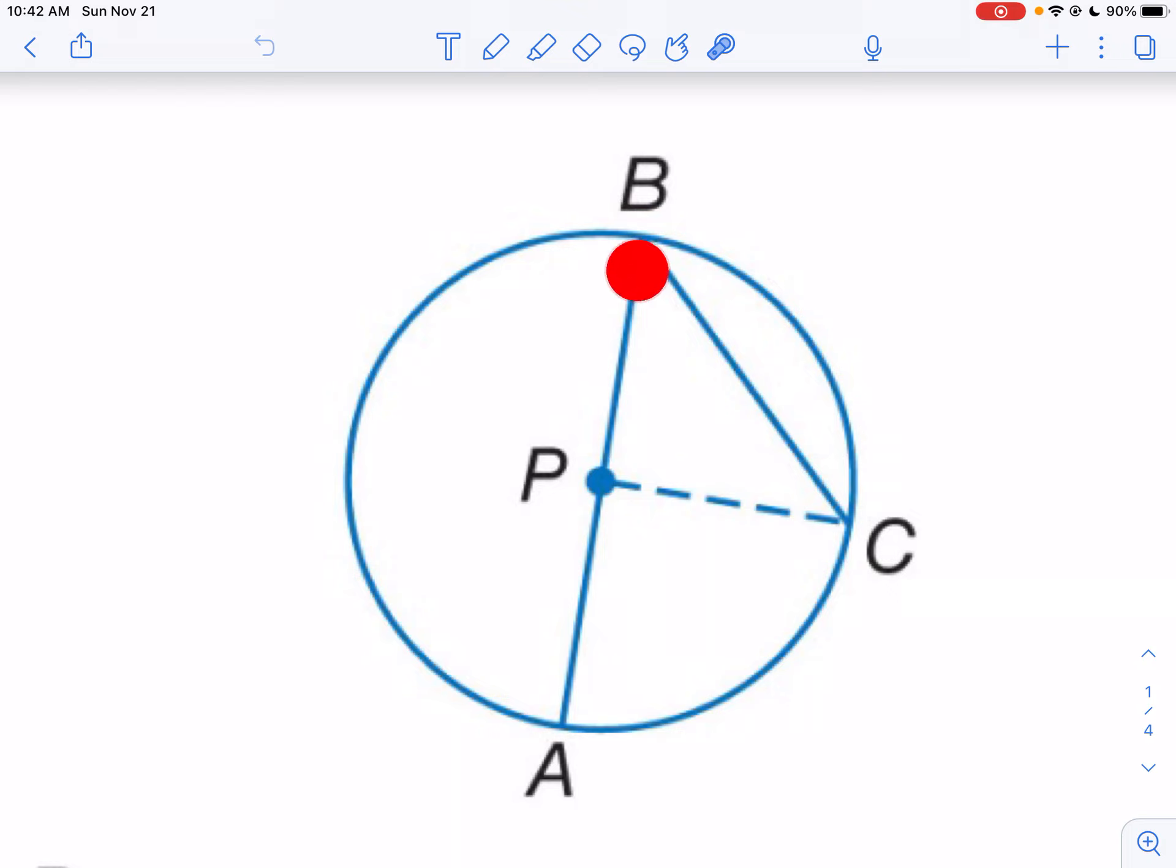So what I've done is I've extended this line out, this diameter out, and I've got this triangle. I've got this isosceles triangle.